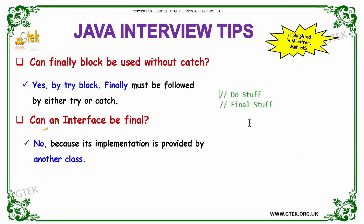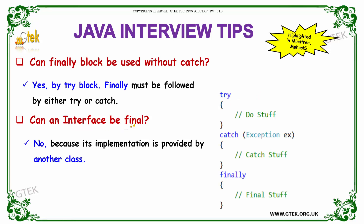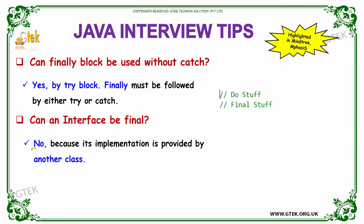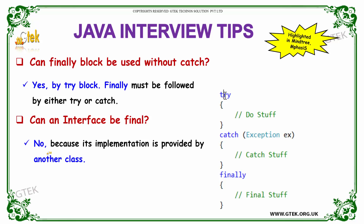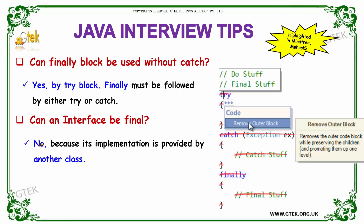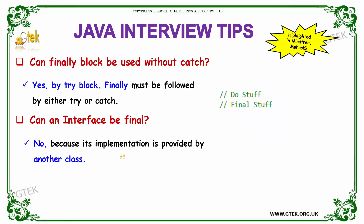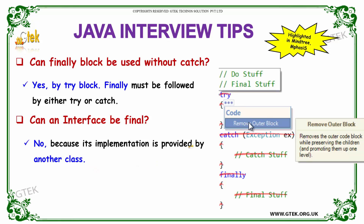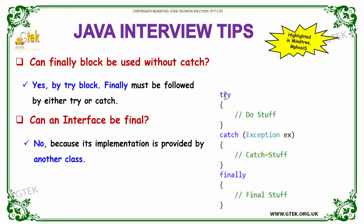Can an interface be final? An interface cannot be final, because its implementation is provided by another class, hence it can't be final. These patterns of questions are highlighted in interviews of Mindtree and Emphasis.